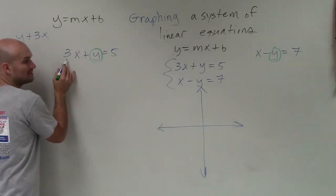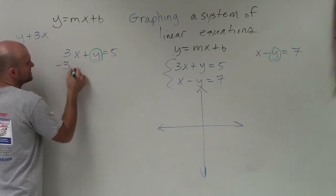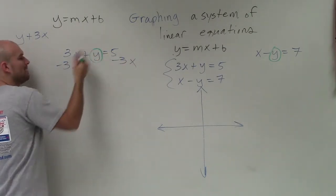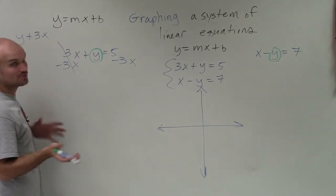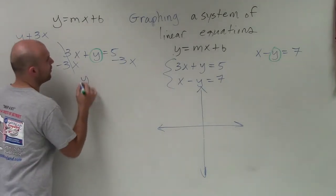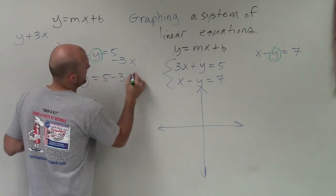Therefore, to undo the addition of 3x, I need to subtract 3x on both sides. Well, positive 3x minus 3x, that adds up to 0. 0x, which is just 0. So therefore, I'm left with a y equals 5 minus 3x.